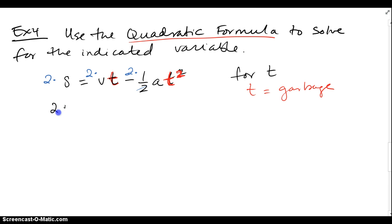So we've got 2s equals 2vt, 2s are gone here, minus a t squared.